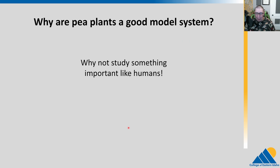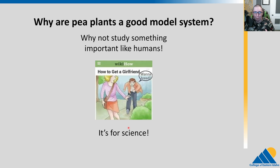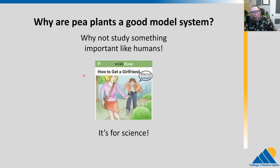Why are pea plants a good model system if we care about human traits like height? Why not study humans? Humans, for studying genetics, don't like to breed the way you want them to breed. You can't ask somebody to breed for science. Just because it's for science doesn't mean people are ethically inclined to do those things.